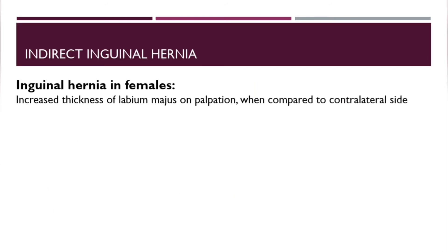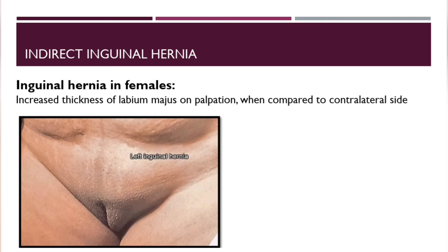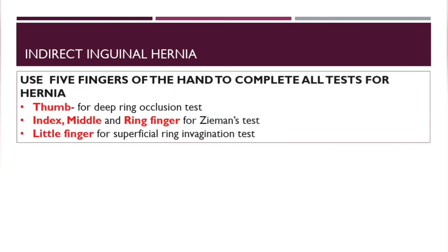In females, increased thickness of the labia majora on palpation when compared to the contralateral side is a specific sign of inguinal hernia. In summary, all five fingers of the hand are used to complete all the inguinal hernia tests: the thumb for the deep ring occlusion test, the index, middle, and ring fingers in Zeman's test, and the little finger for the ring invagination test.